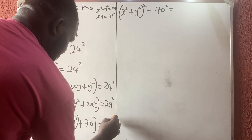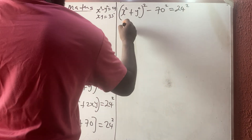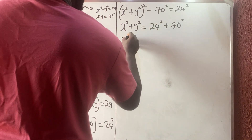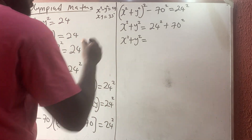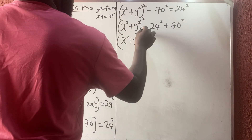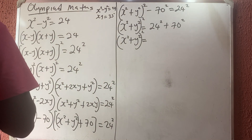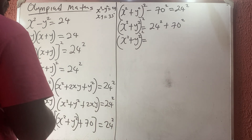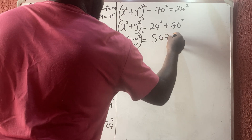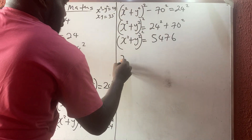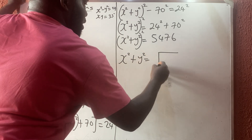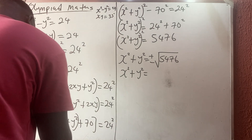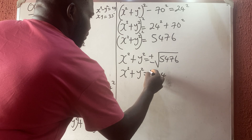So (x squared plus y squared) squared equals 24 squared plus 70 squared, which equals 576 plus 4900 equals 5476. Taking the square root, x squared plus y squared equals plus or minus the square root of 5476, which gives plus or minus 74.